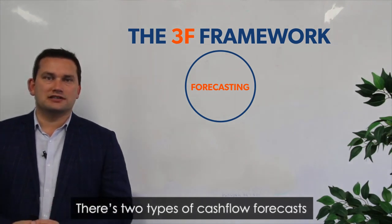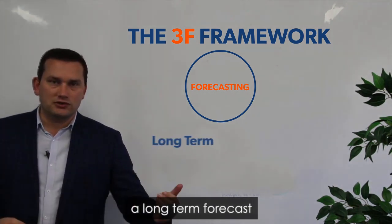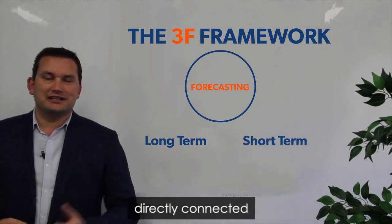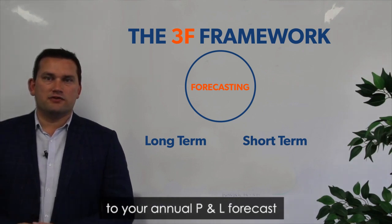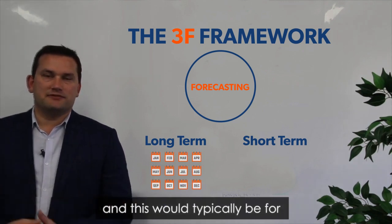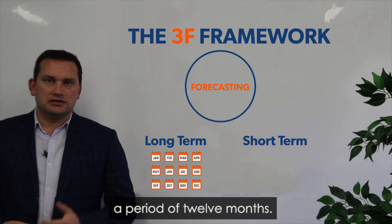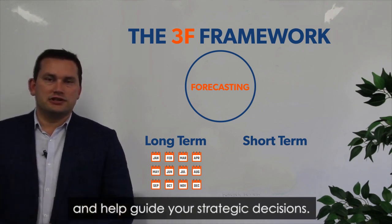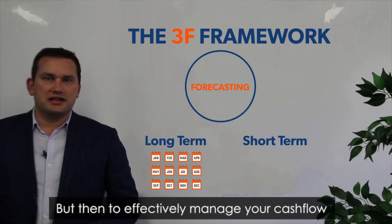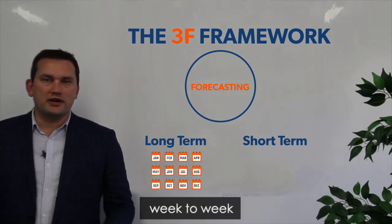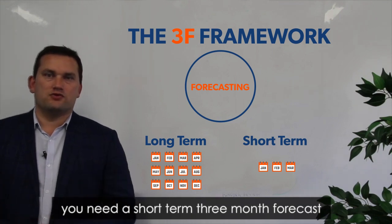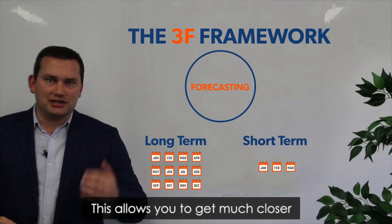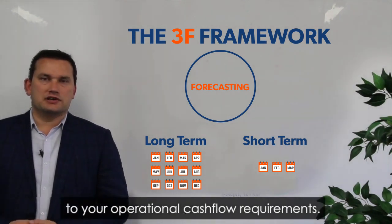There are two types of cash flow forecasts that you need in your business: a long-term forecast and a short-term one. Your long-term forecast is directly connected to your annual P&L forecast and would typically be for a period of 12 months, giving you a big picture view of your cash flow for the year ahead to help guide your strategic decisions. Then, to effectively manage your cash flow week to week, you need a short-term three-month forecast — or 12 to 13 weeks — which allows you to get much closer to your operational cash flow requirements.